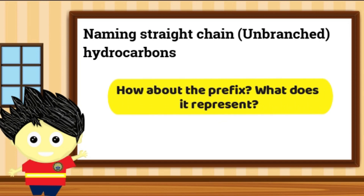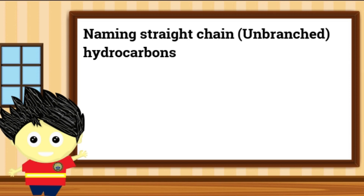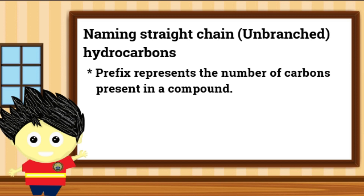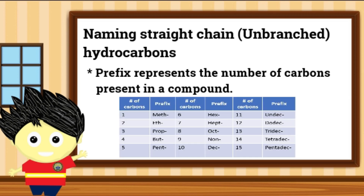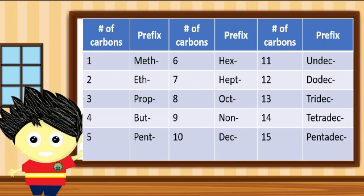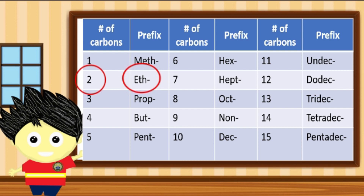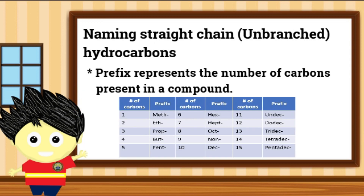Paano naman yung prefix? Saan naman natin ito ibabatay? Ang prefix naman ay ating ibabatay sa bilang ng carbons. Pansinin ang table na ipinapakita. Sa table na ito, nakatala ang mga prefixes na maaari nating gamitin depende sa bilang ng carbons na ibinigay sa sitwasyon. Kapag ang isang hydrocarbon ay may isang carbon, gagamit tayo ng prefix na meth-. Kapag dalawa naman ang carbons, eth- ang prefix na ating gagamitin. Kapag tatlo, prop- ang prefix. Tandaan lamang natin ang table na ito upang maging pamilyar tayo sa gagamitin nating prefix sakaling ibinigay na sa sitwasyon ang bilang ng carbons sa isang compound o binigay na ang chemical formula ng isang hydrocarbon.